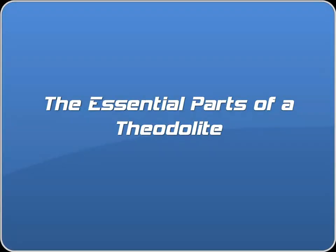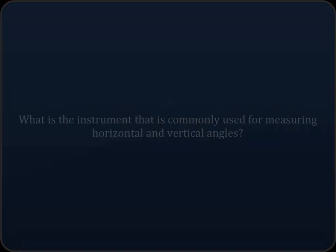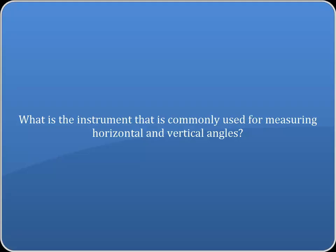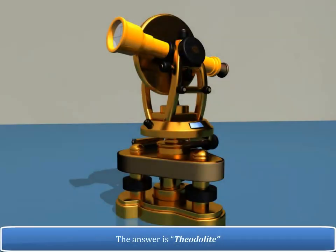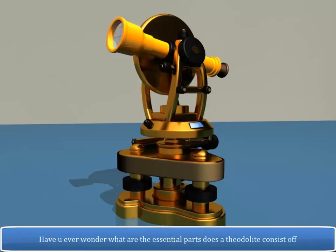The Essential Parts of a Theodolite. What is the instrument that is commonly used for measuring horizontal and vertical angles? The answer is Theodolite. Have you ever wondered what are the essential parts a Theodolite consists of?